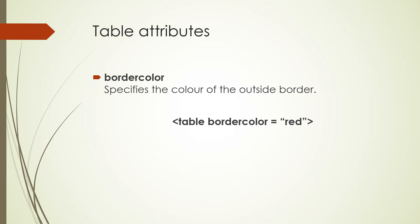The next table attribute is border color. This specifies what color you want the outside border of your table to be. You add this attribute in the opening tag for your table — for example, bordercolor equals red. Take note of the spelling of color as well. This can be various colors: black, blue, green, yellow, etc.